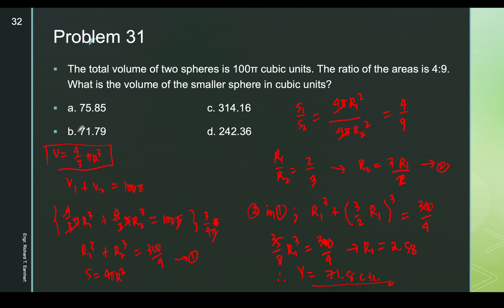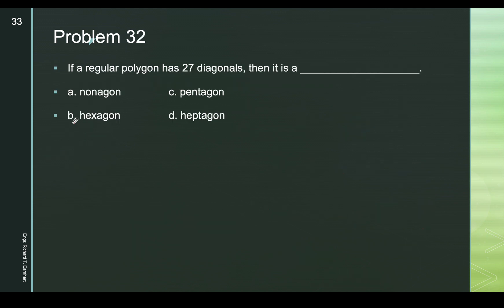The answer here is letter B. Let's continue. Problem: if a regular polygon has 27 diagonals, then what is the type of this regular polygon? The number of diagonals in a regular polygon is given by the formula n/2 × (n − 3), and since this is given as 27, we set up the equation.